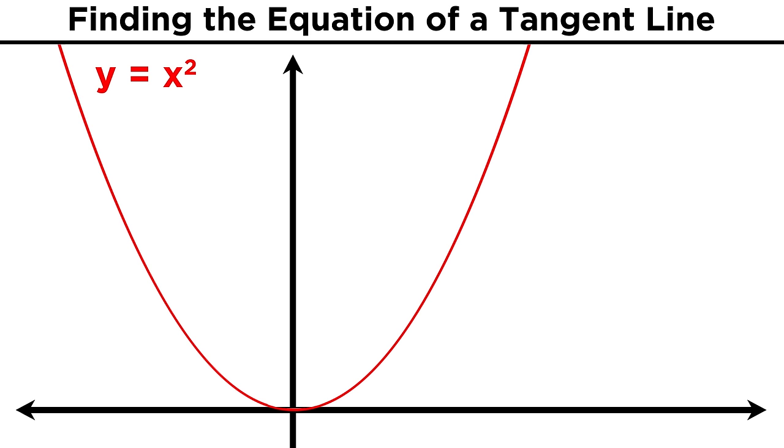Say the curve we are looking at is our good old friend y equals x squared, the basic parabola. Let's choose a point on this curve, like one comma one. We know this point is on the curve because one squared equals one. What is the equation of the tangent line at this point?